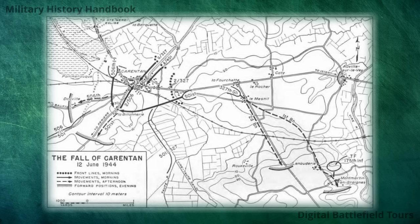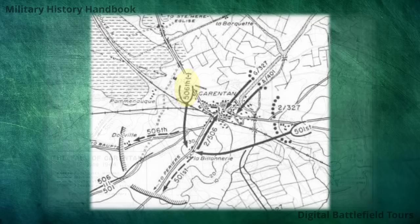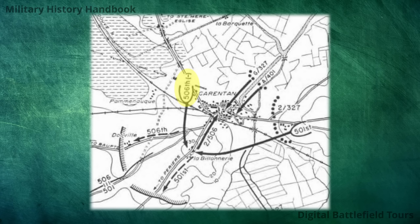The regiment we will specifically look at is the 506th Parachute Infantry Regiment under Colonel Sink. This regiment was given the task of performing a night march on the 11th of June along the western approach of Carentan and then swinging east at the south of the town to occupy Hill 30 — a dominant height overlooking the southern approach. While the 506th was doing this, the other regiments of the division were performing similar actions to the north and east, thereby isolating the town in preparation for an attack from both the south and the north.